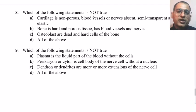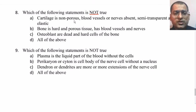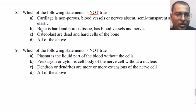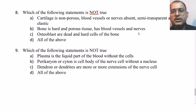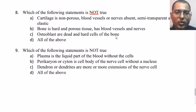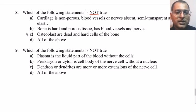Next question: which of the following statements is not true? Cartilage — non-porous, blood vessels and nerves absent, semi-transparent and elastic; bone — hard and porous tissue, has blood vessels and nerves; osteoblasts — dead and hard cells of the bone. The right answer is osteoblasts are living cells of the bones, not dead.